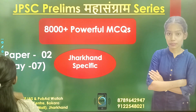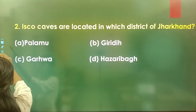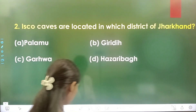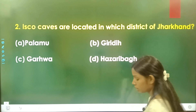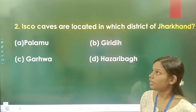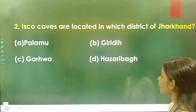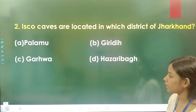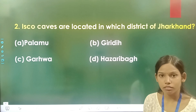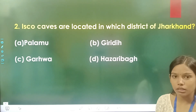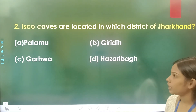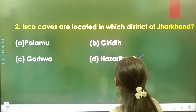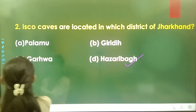Question number 2: Isko caves are located in which district of Jharkhand? Option A is Palamu, option B is Giridih, option C is Garhwa, and option D is Hazaribag. The correct answer is option D, Hazaribag. Isko caves are located in Hazaribag.